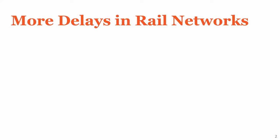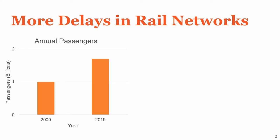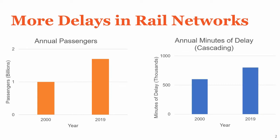As the title of our work suggests, we'll be focusing on delays in rail networks, in particular the British Rail Network. Since 2000, the British Rail Network has seen a large increase in number of passengers, nearly doubling from 1 billion to 1.7 billion passengers in 2019. At the same time, the British Rail Network has seen increases in delays, with one particular type of delay known as cascading delays, increasing from 600,000 to 800,000 minutes in 2019. If something isn't done to adapt rail services and fix these delays, they will continue to increase, causing potential economic damages for those who rely on rail services in their everyday lives.